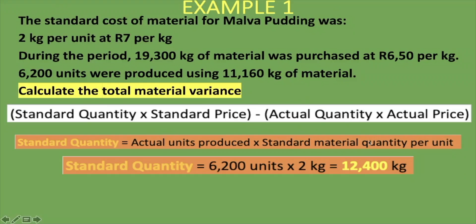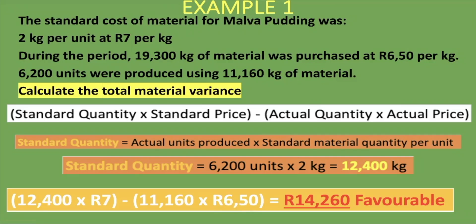Now we plug in all the values. Standard quantity of 12,400 kg times standard price of 7 rand, minus actual quantity of 11,160 kg times actual price of 6 rand 50, gives us 14,260 rand — and it's favorable. The 12,400 times 7 rand is a greater amount than 11,160 times 6 rand 50, meaning we didn't spend as much as planned. We were able to save 14,260 rand, taking into account both the material quantity variance and material price variance.